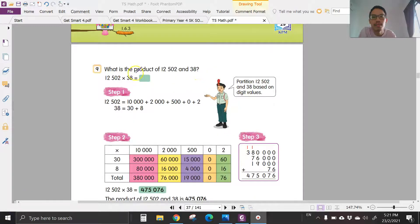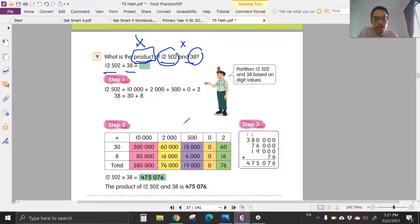Question 9: What is the product of this and this? When you see the word 'product,' that means you have to times. So take this number times this number: 12,508 times 38. Then you get your answer.